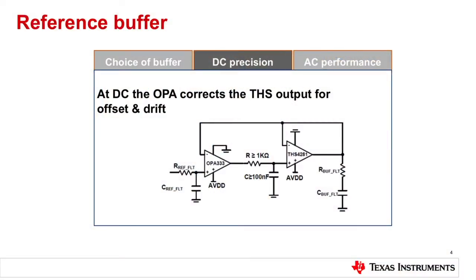Let's analyze this further. At DC, the circuit reduces to the OPA333 correcting the errors induced by the THS4281. Because it's a chopper-stabilized amplifier — also known as zero-drift or auto-zero — anything it sees at its input it essentially eliminates. This gives you 25 microvolts of offset and very low drift in double-digit nanovolts per degree Celsius.